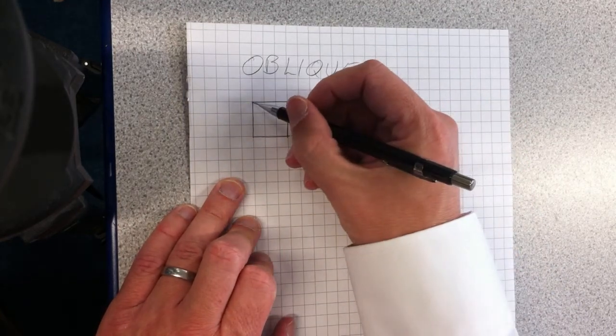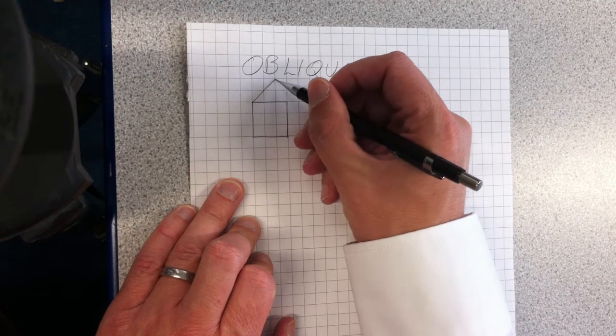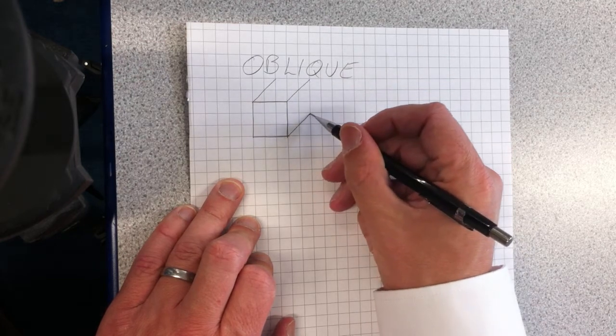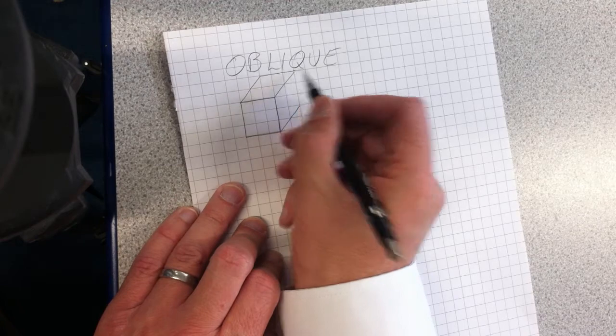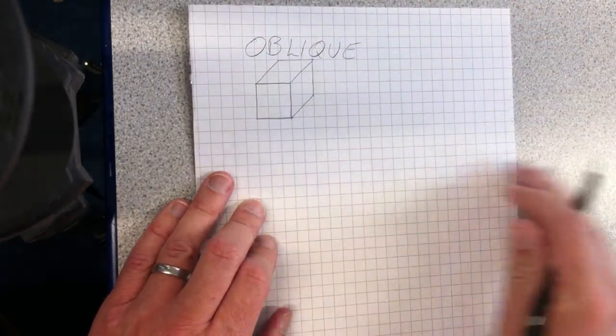Then you can use corner through corner through corner to create your 45-degree line for the depth of each of these corners. Using the squares to help you create a parallel line that goes around the outside towards the back of the object.